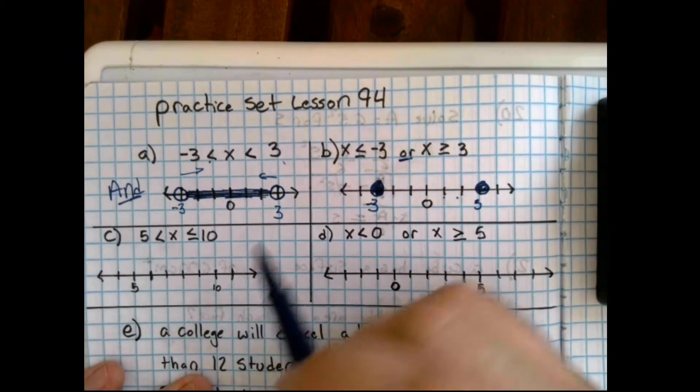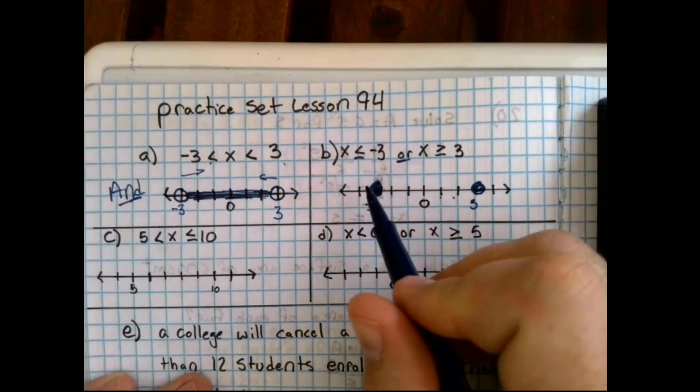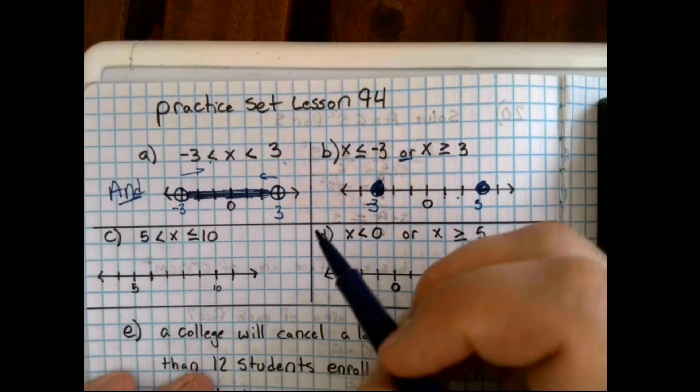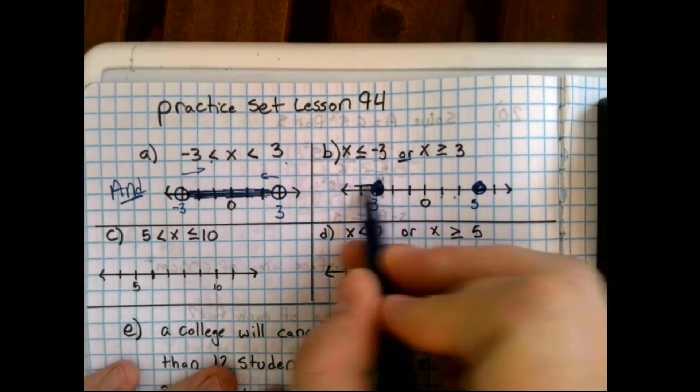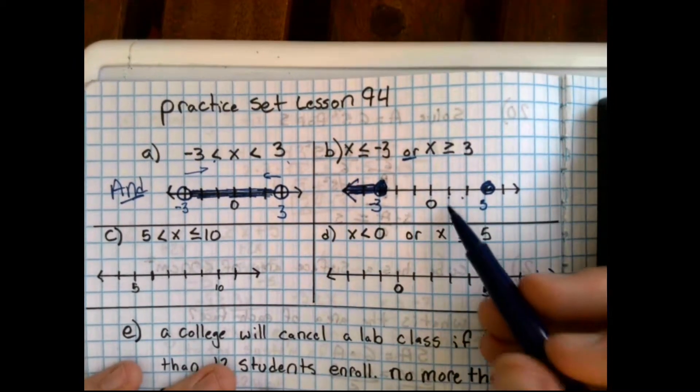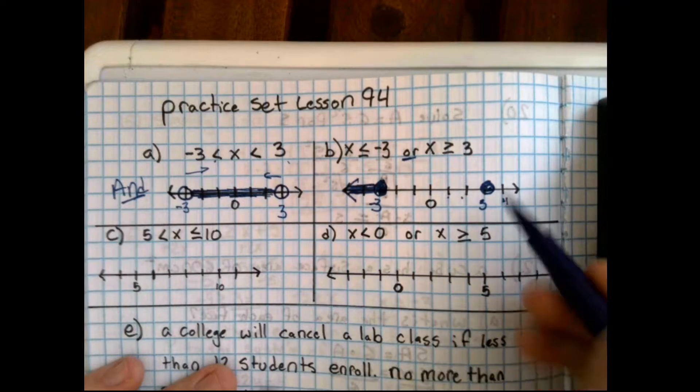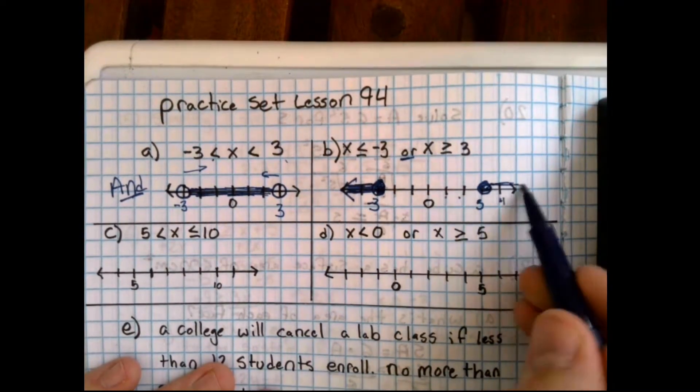So, x is less than negative 3. The numbers which are smaller than negative 3 are the numbers that are more negative. So, we're going to the left. The numbers which are greater than 3 would be things like 4, 5, 6, and so on. So, we're going to the right.